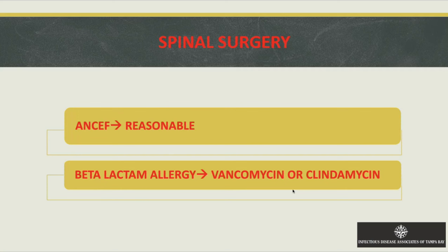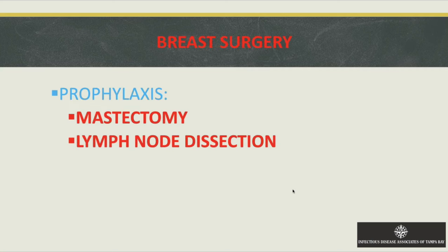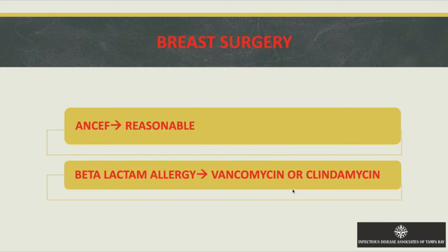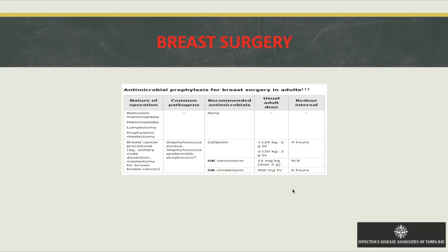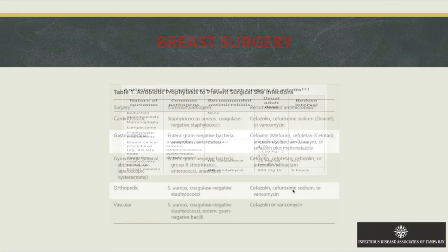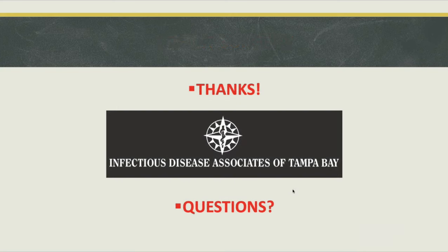For breast surgeries, reductions and lumpectomies generally don't require pre-op prophylaxis. Mastectomies and lymph node dissections for malignancies warrant ANCEF prophylaxis. Beta-lactam allergies: use vancomycin or clindamycin. For prophylactic mastectomy or reduction mammoplasty, guidelines typically do not recommend pre-op antibiotics, though each patient's scenario should be considered individually. That covers the surgical prophylaxis guidelines.